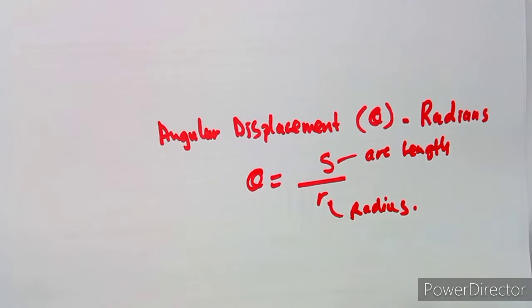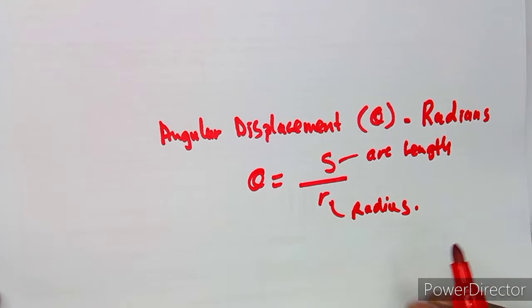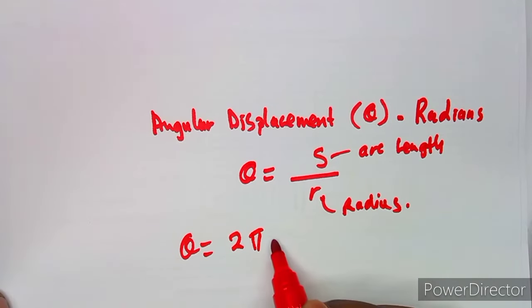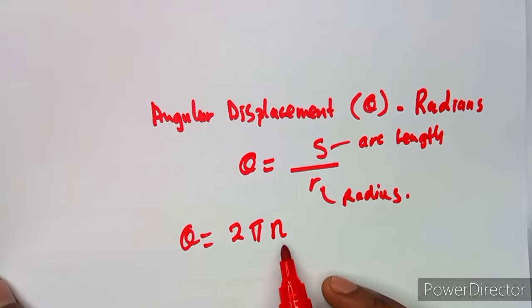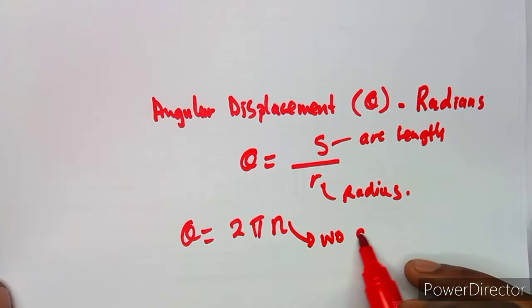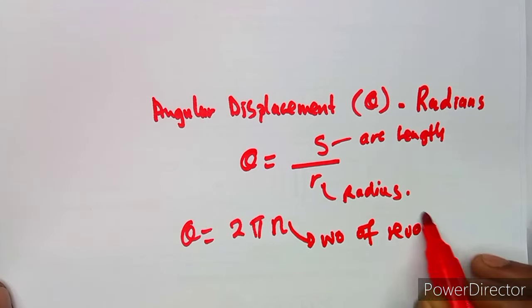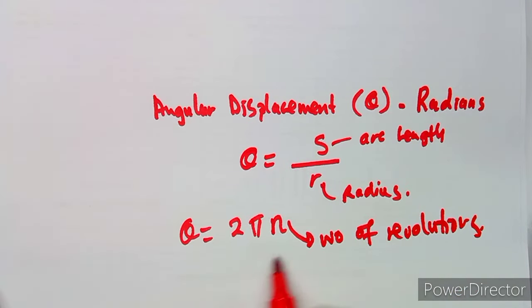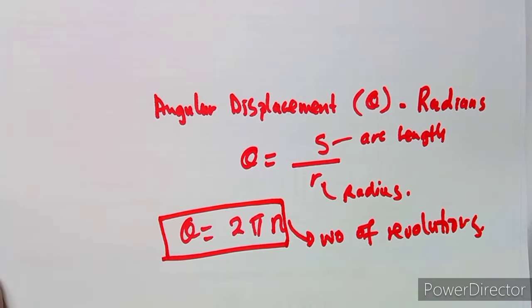The angular displacement theta can also be found by θ = 2πn, whereby n represents the number of revolutions. That means you can also find the number of revolutions from this concept — theta is equivalent to 2π times n, where n is the number of revolutions.